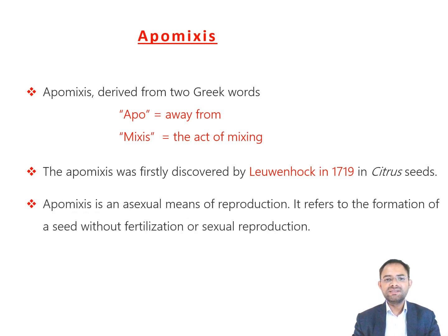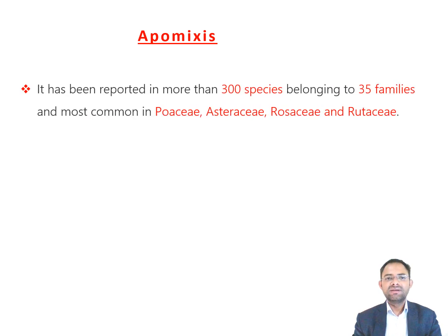Apomixis is an asexual means of reproduction; it refers to the formation of a seed without fertilization or sexual reproduction. Apomixis is very common in higher plants. It has been reported in more than 300 species belonging to 35 families, and it is most common in Poaceae, Asteraceae, Rosaceae, and Rutaceae families.